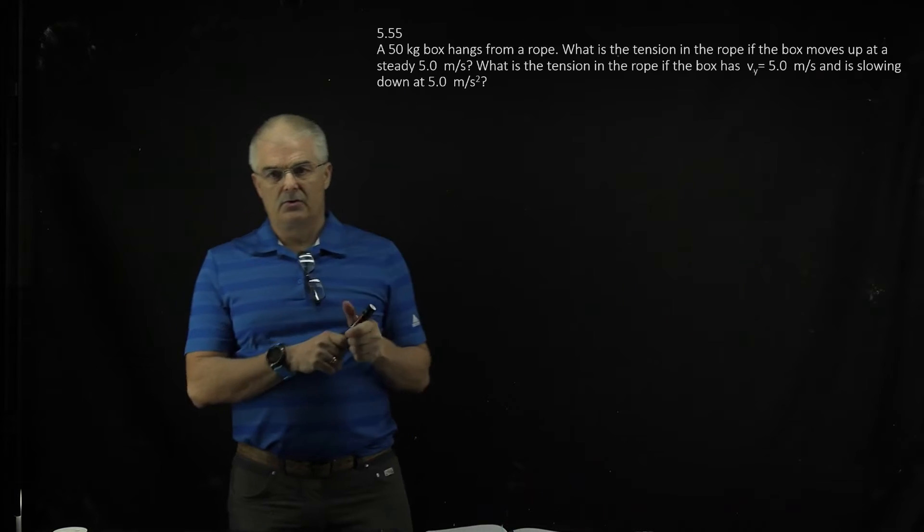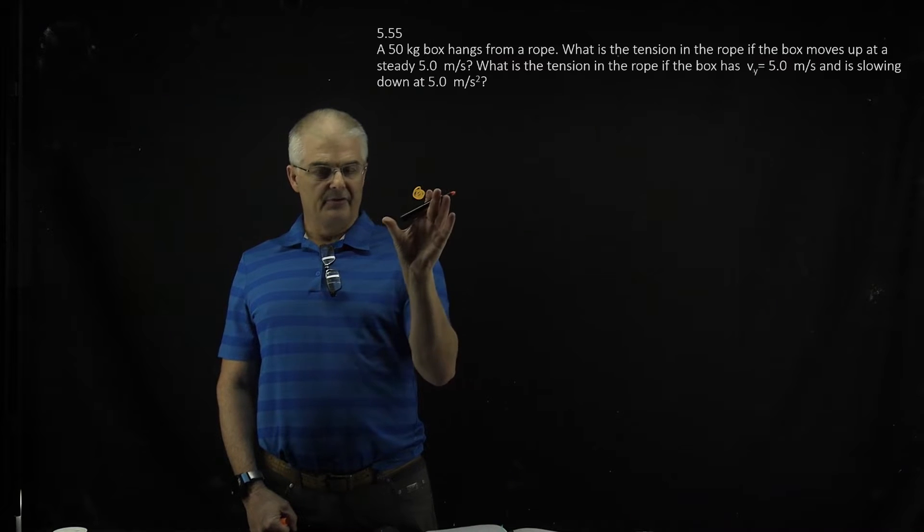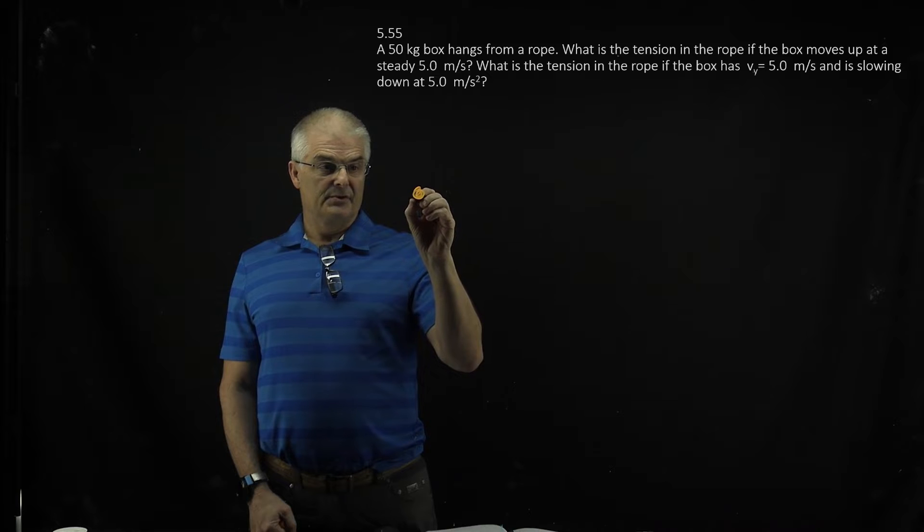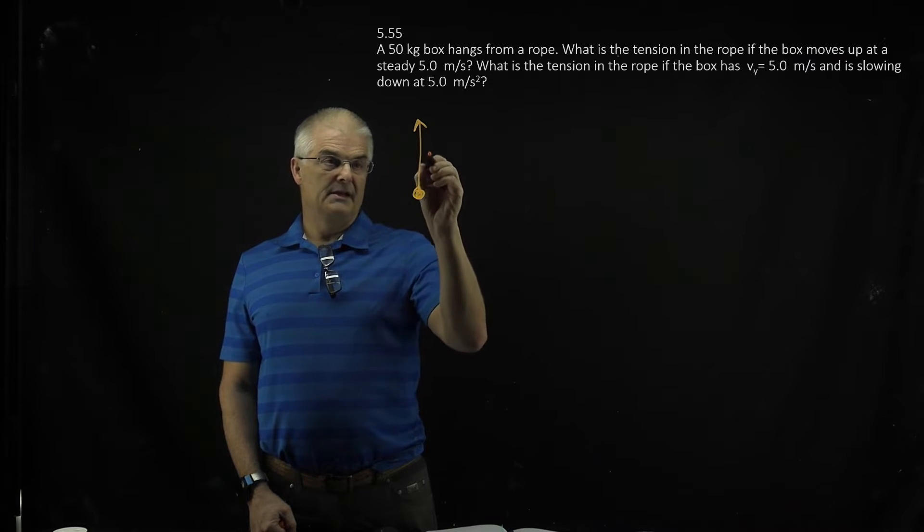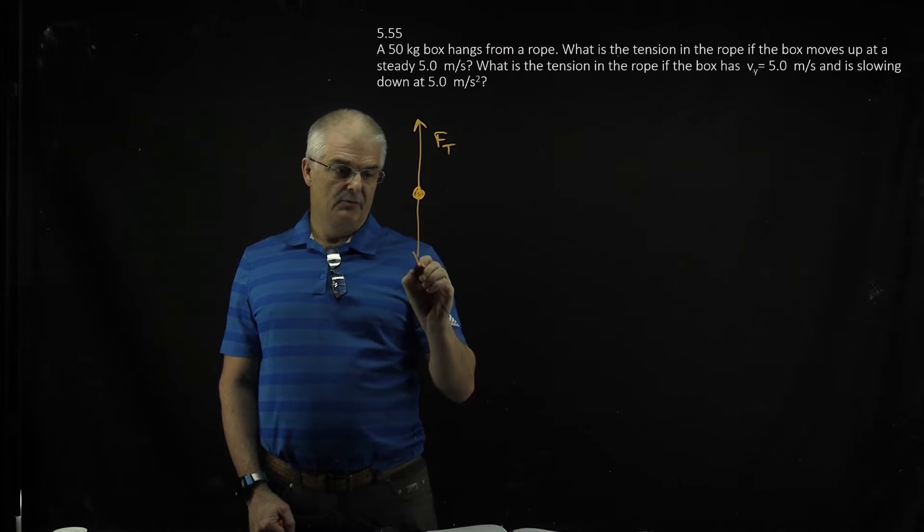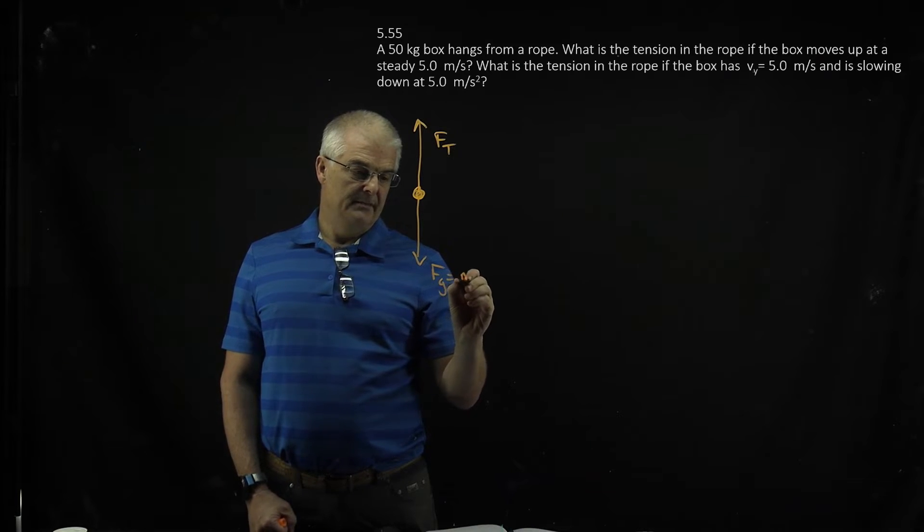So we have a 50-kilogram box hanging from a rope. We draw the free-body diagram. Remember, a free-body diagram is you just make a dot, and it's hanging from a rope. So the rope is going to be a tensional force pulling up, and then there will be the weight, the force of gravity.